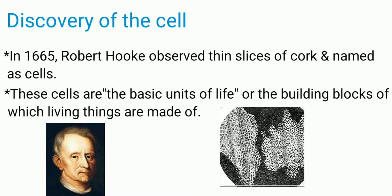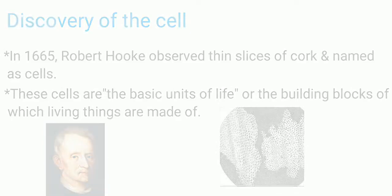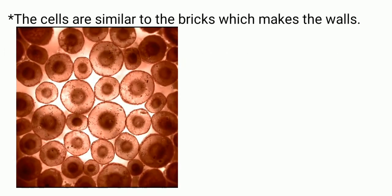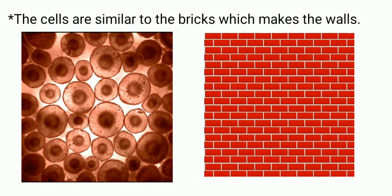Cells can be described as the basic units of life, or the building blocks of which living things are made. Just imagine a wall — it is made of many bricks. Cells are like the bricks that make up living things. Bricks are dead, identical in shape and large, but cells are living, of many different shapes, and microscopic in size.